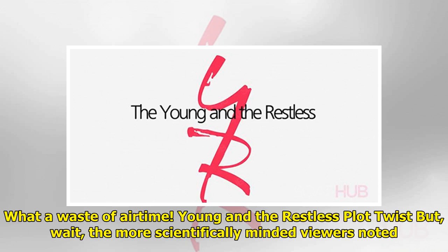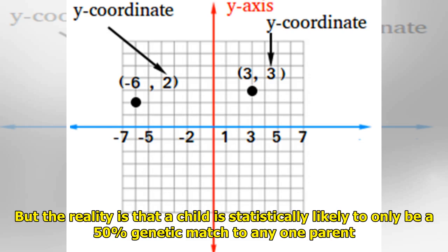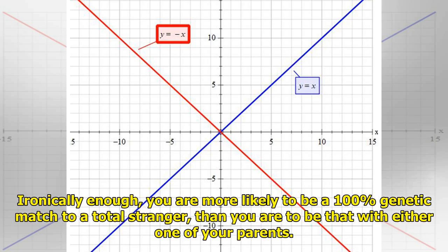But wait. The more scientifically minded viewers noted that while it sounds like good news and sounds like Dom has been proven to be Abby and Devon's biological child, the reality is that a child is statistically likely to only be a 50% genetic match to any one parent. Ironically, you are more likely to be a 100% genetic match to a total stranger than you are to be that with either one of your parents.